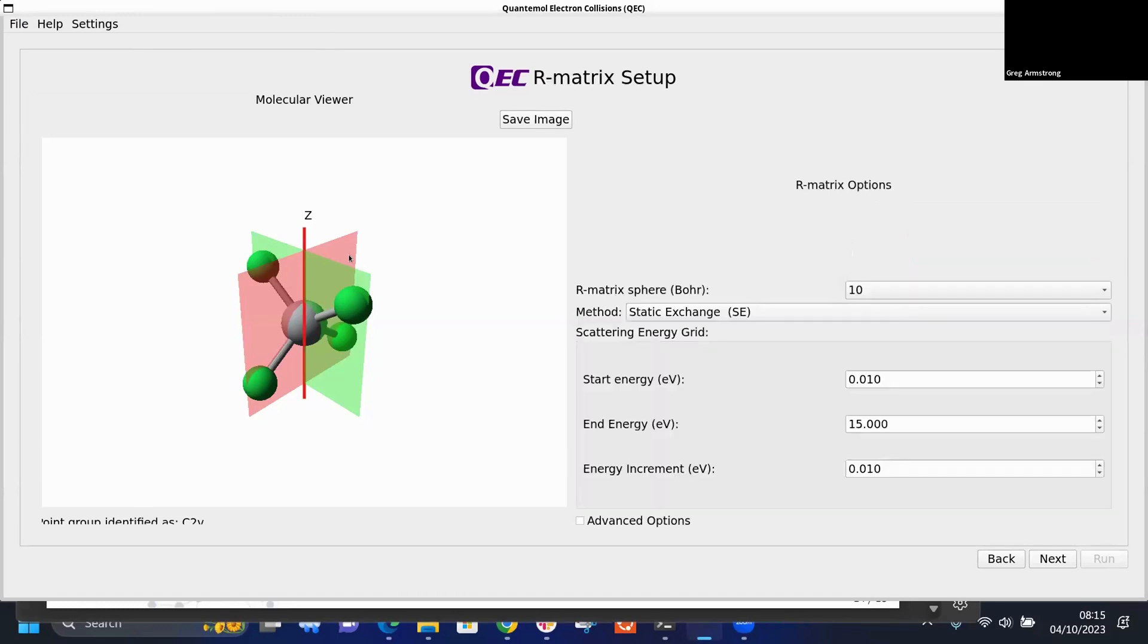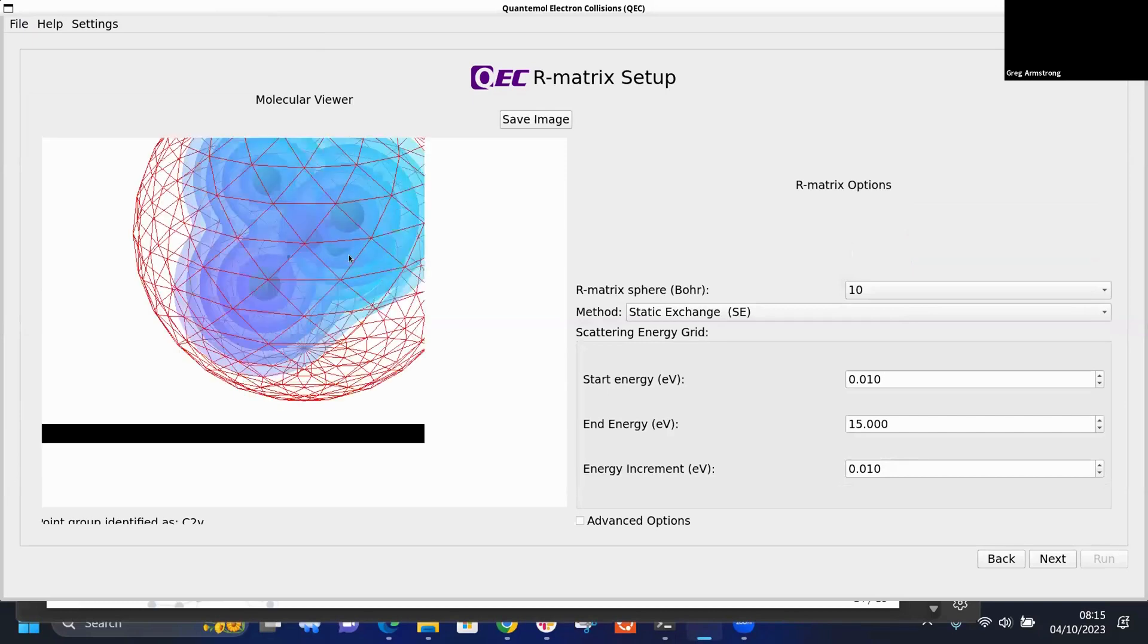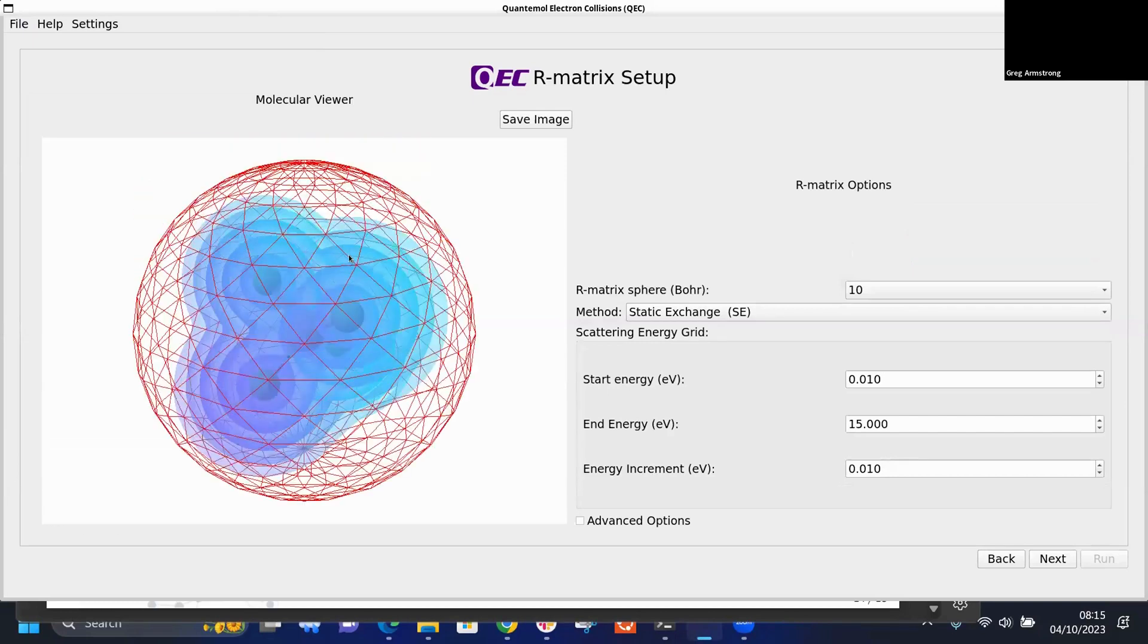This is set up and we move on to the R-matrix setup. This is our inner region on the left, target molecule within it. The R-matrix sphere is 10 atomic units, that's probably fine for this case. The method, the level of detail in the wave function, I'm going to take a static exchange which is effectively Hartree-Fock for the target plus the scattering electron in a virtual orbital. Then this is the energy grid on which the cross sections ultimately will be printed, which is reasonable for most cases.